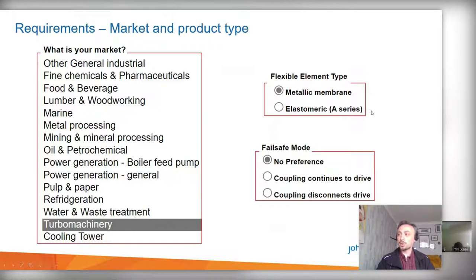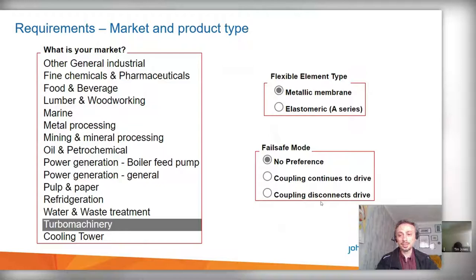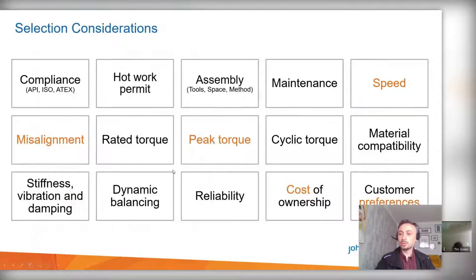For flexible element type, you can have a metallic membrane or an elastomeric element. Elastomers provide damping characteristics but wear out and typically need replacement within a year. Metallic membranes can operate over 30 years, sometimes 50 years if properly selected and designed. Fail-safe features can also be specified — for example, a diaphragm coupling can be designed to disconnect upon failure: when it reaches a failure point, the product shears and stops transmitting torque, but all parts can still rotate for a certain number of cycles.